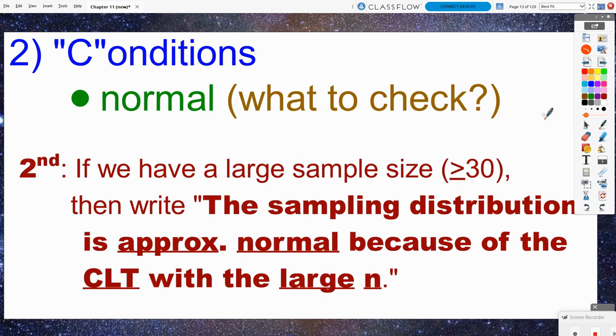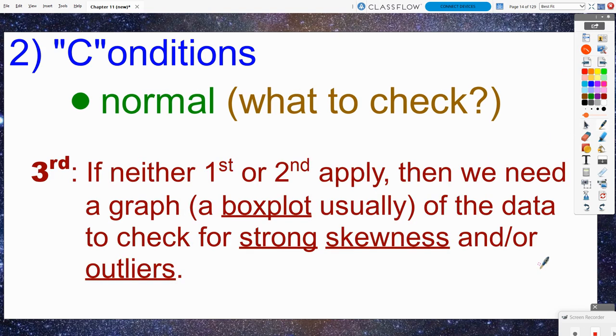The backup to number one is if we have a big enough sample size, then we can use the central limit theorem. Our large sample size was at least 30. I've been saying 25 and up is still probably acceptable, but we're really looking for that 30 and higher. So if we have that big sample size, then we're going to write the sampling distribution is approximately normal because of the central limit theorem with the large N, with the large sample size. And you don't have to specify how large is large enough. You just need to know in the back of your mind that large is typically 30 or more, or we could even say 25 or more if we're in that ballpark.